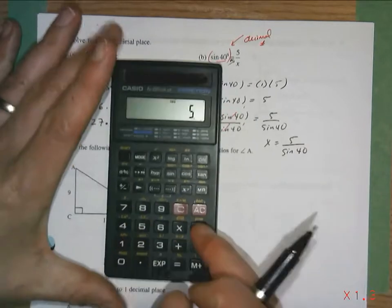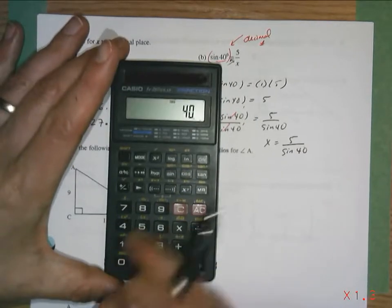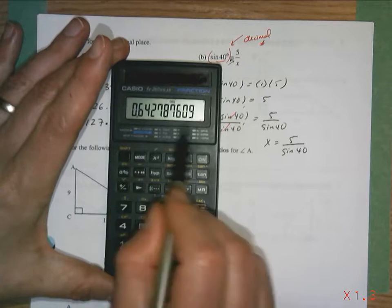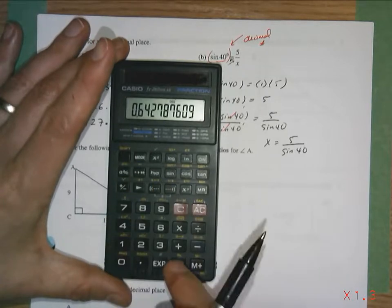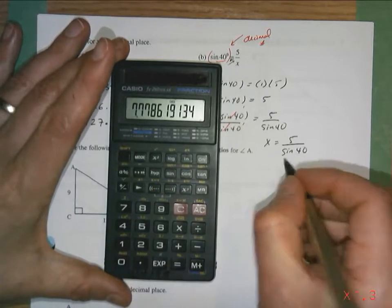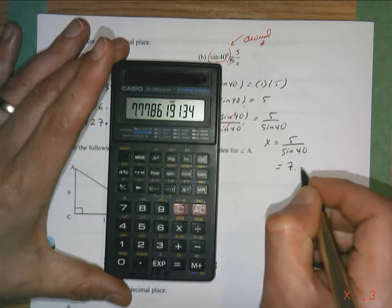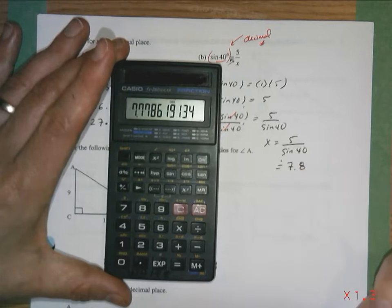So if we do 5 divided by sine of 40. Now that decimal is the sine of 40. I have to hit equals to get 5 divided by that. And it's 7.8 approximately to one decimal.